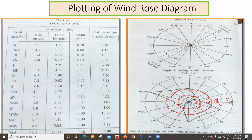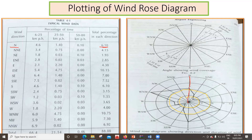Once the circles are set up, we do the actual plotting. Look at the table: wind direction is north, and the corresponding total percentage in each direction is 6.10. So in the north direction on the diagram, since the second circle represents 6 and the value is 6.10, the point lies just beyond that second circle. This is the first plotted point.